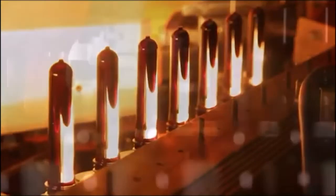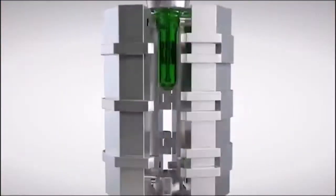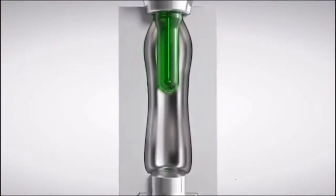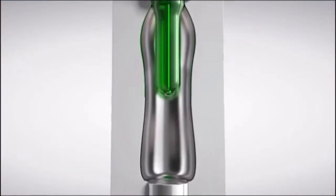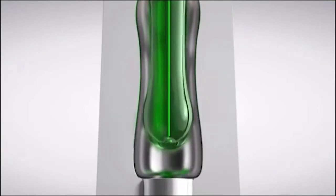Preforms pass through heater lamps before entering the mould, which defines the shape of the bottle. A rod enters the preform and stretches it, then a high pressure blast of air forces the preform into the blow mould, creating the bottle.